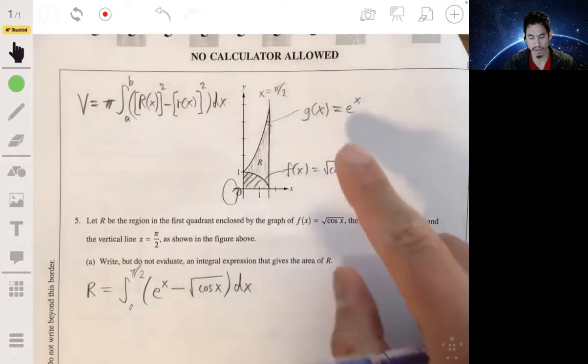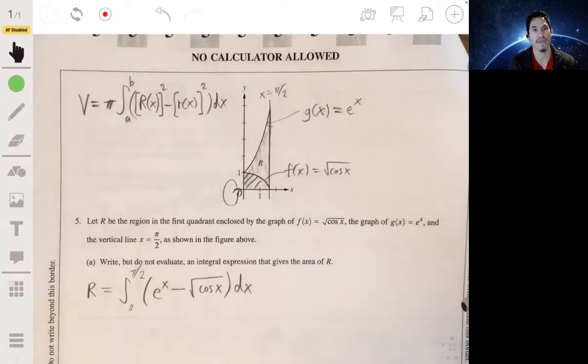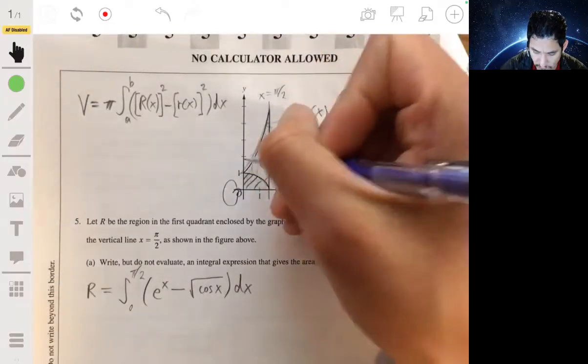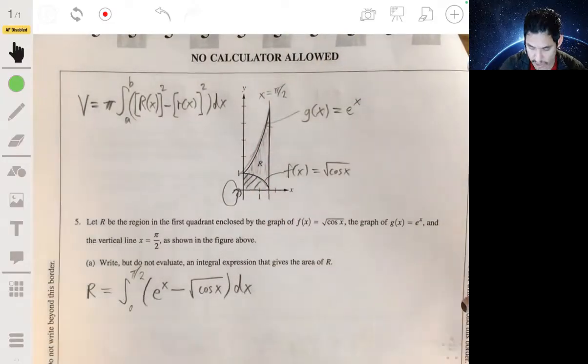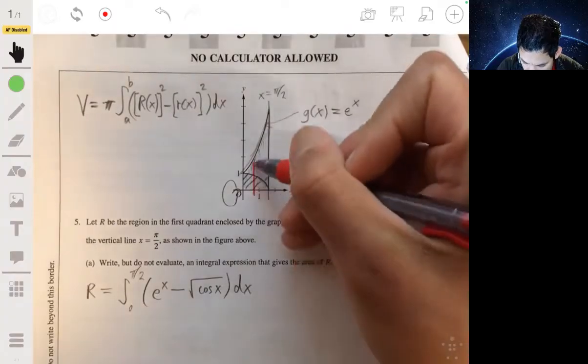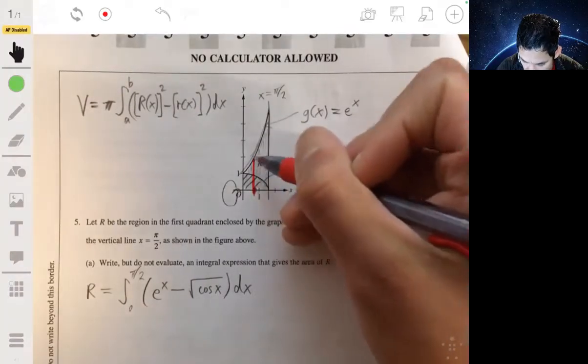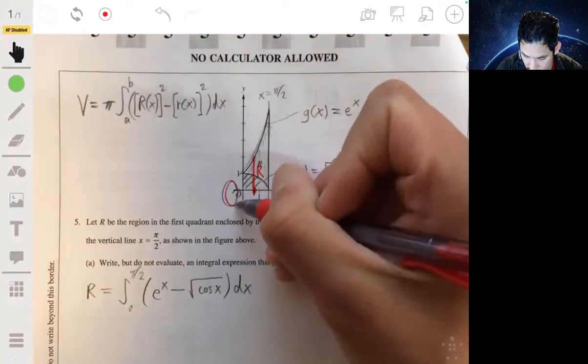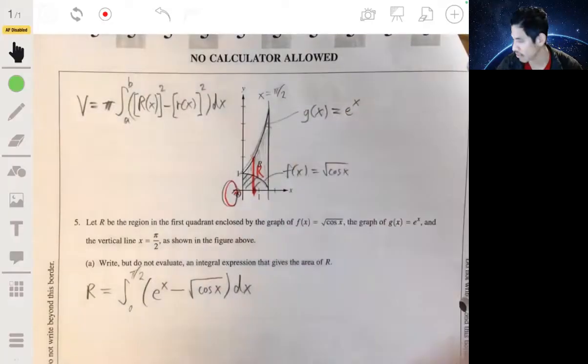And in this case, since we're revolving around a horizontal axis, it'll be with respect to x. So what we're doing here is we're going to have our big radius will be this guy, it'll be the one over here. Because remember, the big radius is the one that's farther away from the axis of revolution, which is the x-axis.